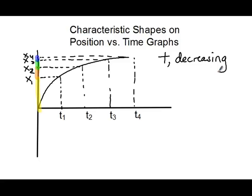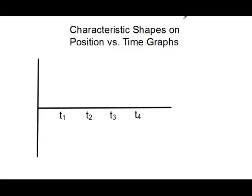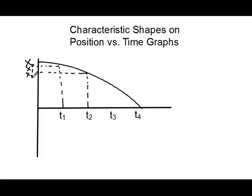There are two more shapes, and these are a little more difficult because now we're changing direction — we're coming back the other way. The first one we're going to look at is a shape that looks like the mirror image of that humpback. Now we're coming back the other way. The object is going to start up here at x0, then x1, x2, x3, and x4. We know that it's going to be negative because its slope is going the other way. So the first thing we know is that it's going to be negative, and now we need to figure out if the object is speeding up or slowing down.